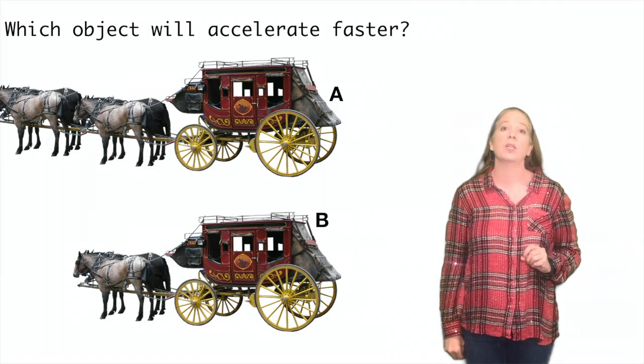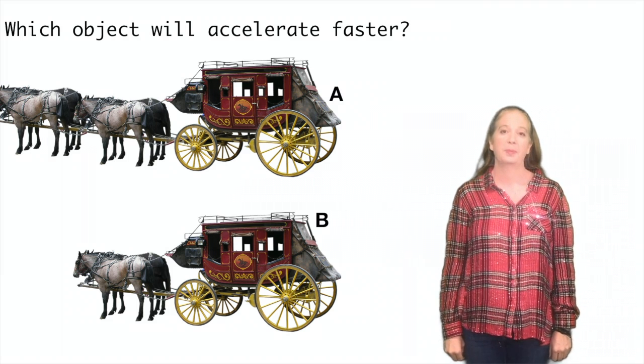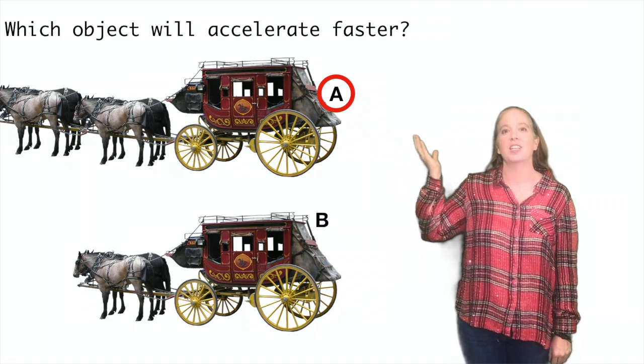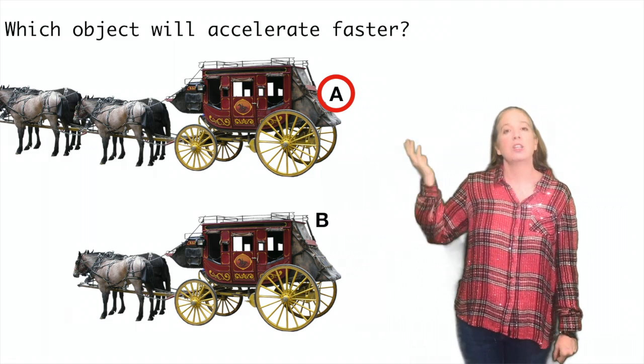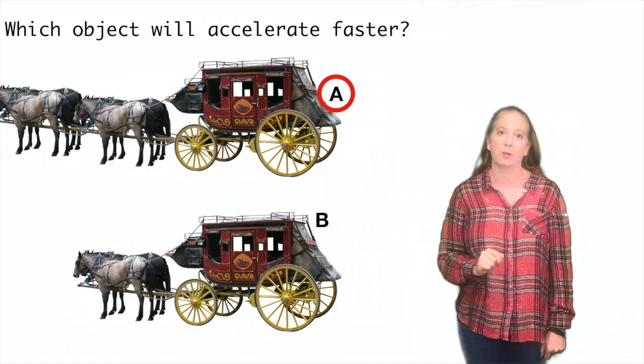Now, which object will accelerate faster? A has four horses compared to B. So since the four horses will give it more force, it's going to accelerate faster.